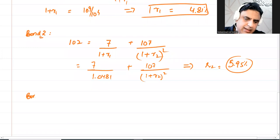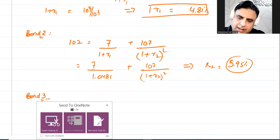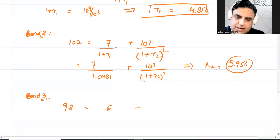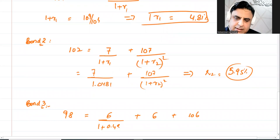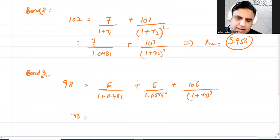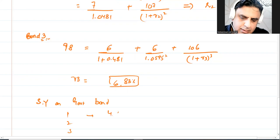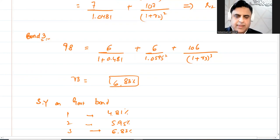Now calculate Bond 3: current value 98, six percent coupon. Cash flows are: year one = 6, year two = 6, year three = 106. Year one discounted at 4.81 percent, year two at 5.95 percent raised to the power two, and solving for r3 gives 6.83 percent. So the spot yields on government bonds are: r1 = 4.81%, r2 = 5.95%, r3 = 6.83%.